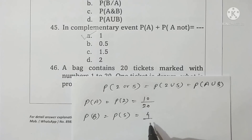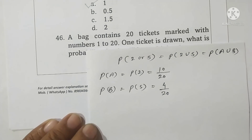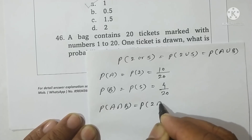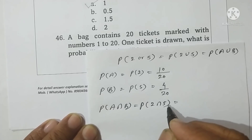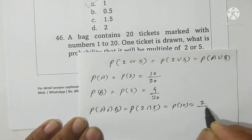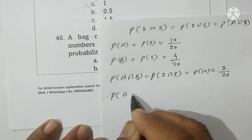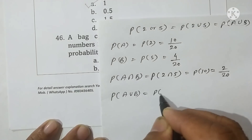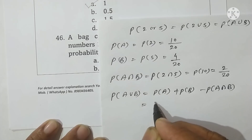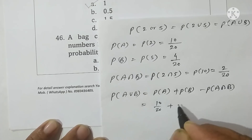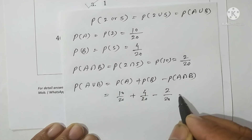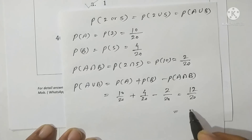Probability of A and B (multiples of both 2 and 5, i.e., multiples of 10) are 2, so probability A and B is 2 upon 20. Therefore, probability of A union B equals 10/20 plus 4/20 minus 2/20 equals 12 upon 20. The final answer is 3 upon 5. Option A is correct.